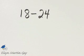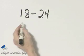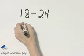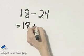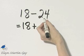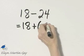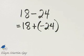Let's find 18 minus 24. Since we're subtracting, we'll rewrite this as the first number, 18, added to the opposite of 24. The opposite of 24 is negative 24.